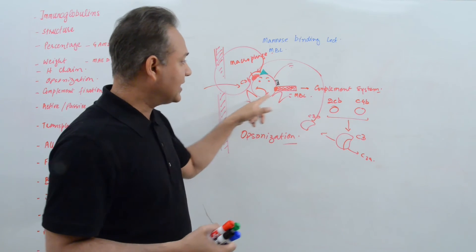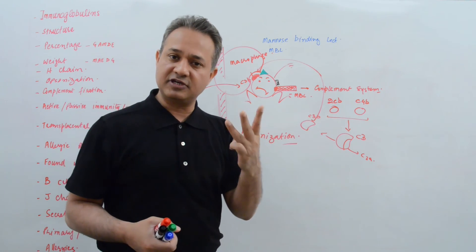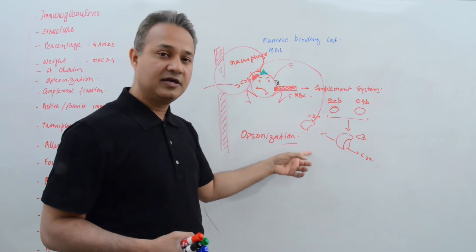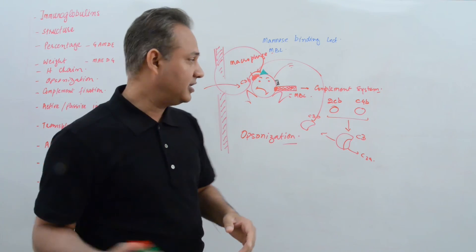This way of complement activation is the MBL pathway of complement activation. Complement is activated in three ways. MBL pathway is one, that is the one you're seeing here. The second pathway is the alternate pathway.